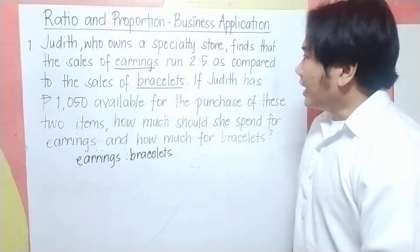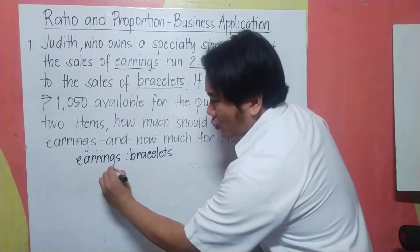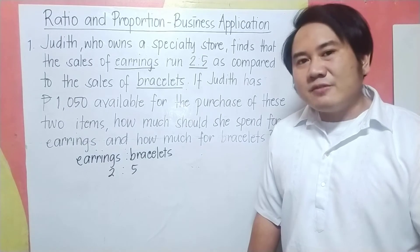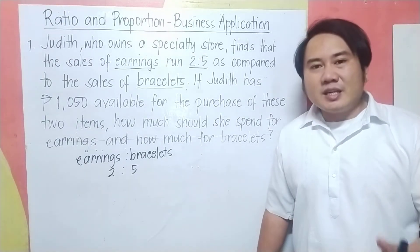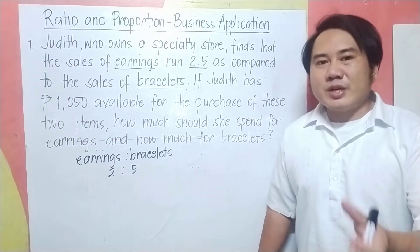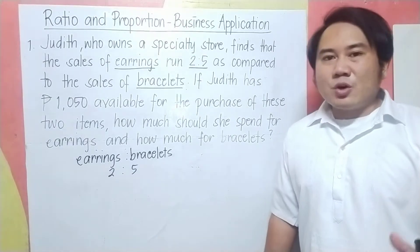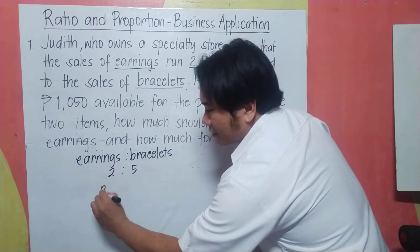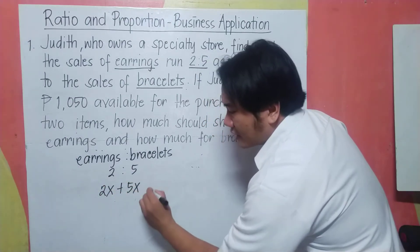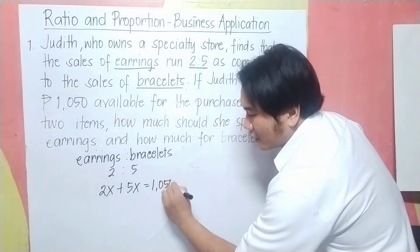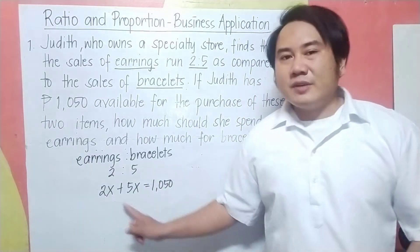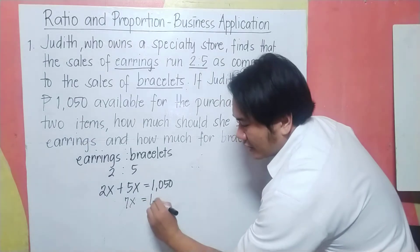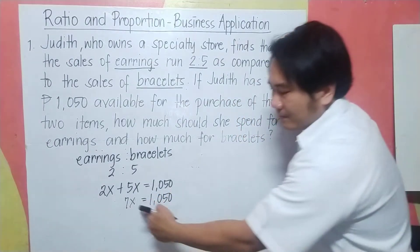The ratio of earrings to bracelet is 2 to 5. Since Judith has 1,050 pesos to spend on both the bracelet and earrings, we need to find how much she can allot for each. To solve that, we are going to add the two quantities and assume a value of x, giving us 2x plus 5x equals 1,050.